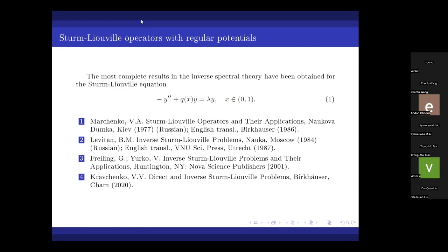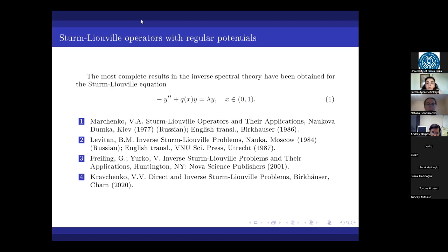The first two references are the classical monographs by Marchenko and Levitan, and there are also more recent books by Freiling and Yurko and by Kravchenko. The basic results on inverse Sturm-Liouville problems can be found in these books and in the references therein.